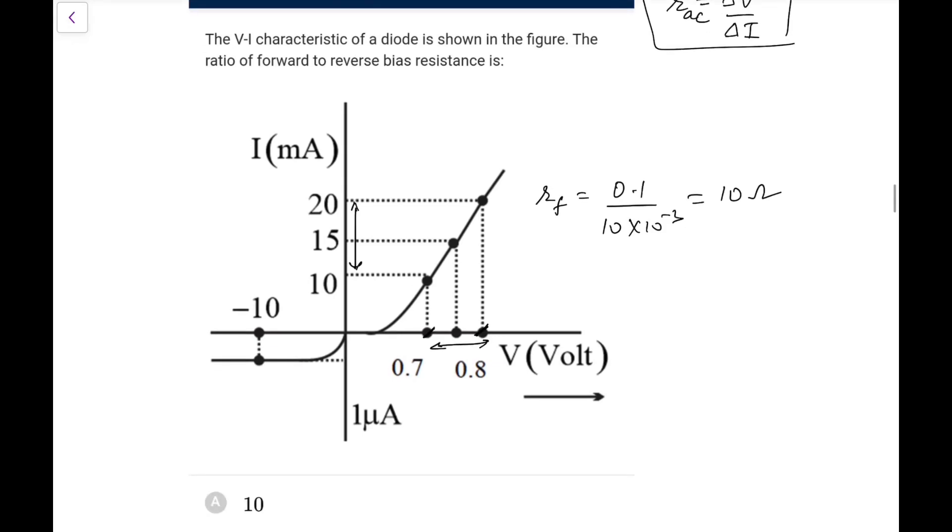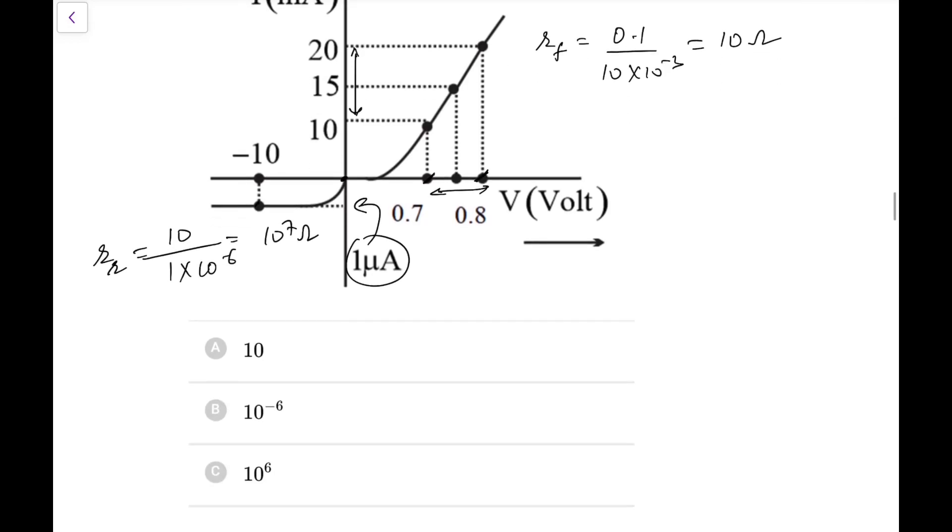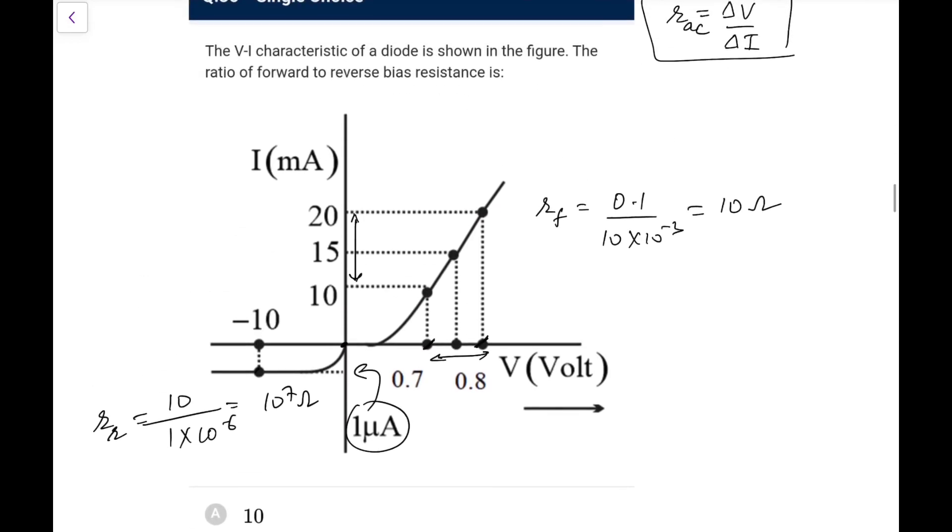Now what is in the reverse? Here it is 0, here it is minus 10. So change of 10 results in a current of - this is 1, I think would be written here - 1 microampere. So this is the reverse, R in reverse bias, that is equal to 10 to the power 7 ohms.